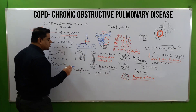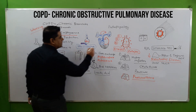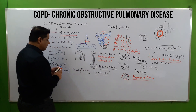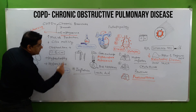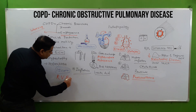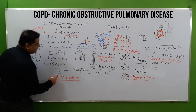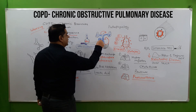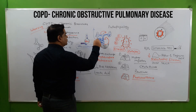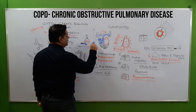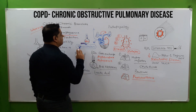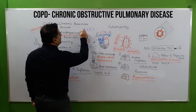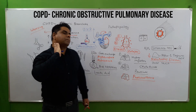The right ventricle will pump more and more to send blood for gas exchange, but unfortunately gas exchange is not occurring. Due to overexertion and over-functioning, the right ventricle will show right ventricular failure. Blood backs up through the right atrium to the inferior and superior vena cava, causing jugular vein distension.